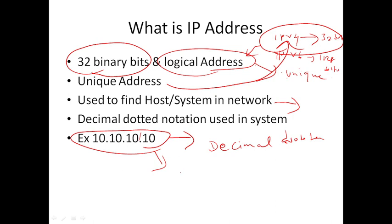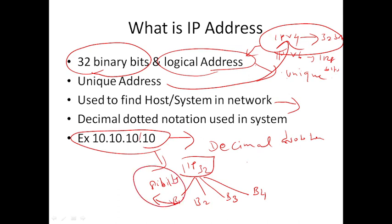From the 32-bit IP address, we are dividing them into 4 bytes: byte 1, byte 2, byte 3, byte 4. One byte contains 8 bits. This representation we are giving in the notation of decimal representation: b1 dot b2 dot b3 dot b4, so totally 32-bit address.